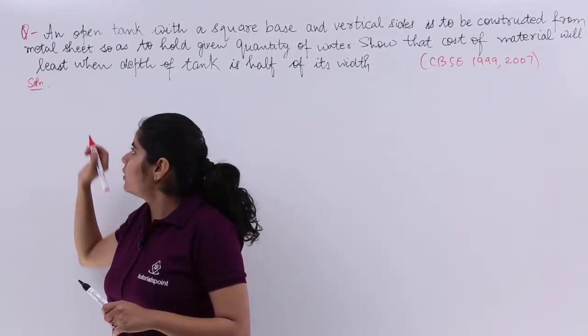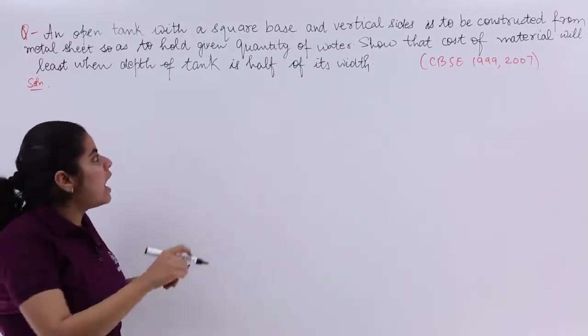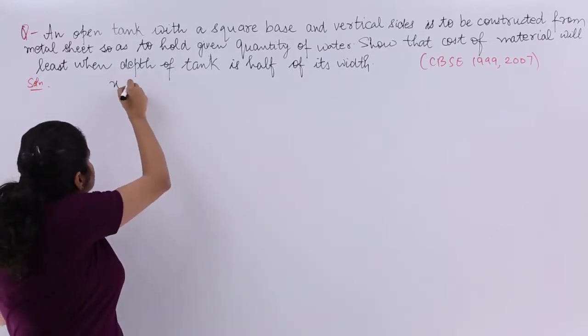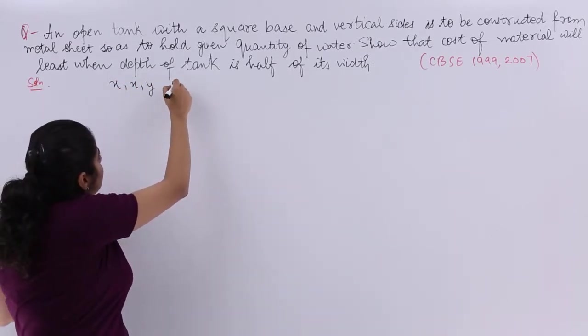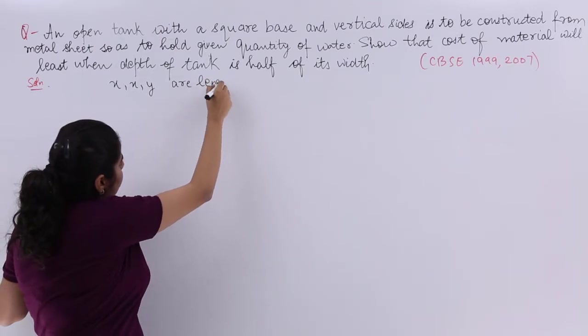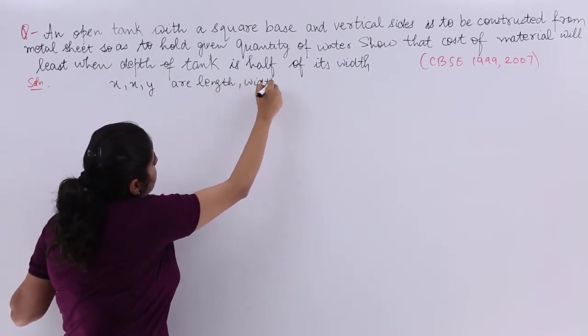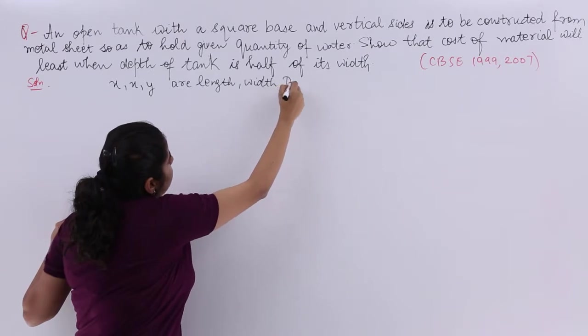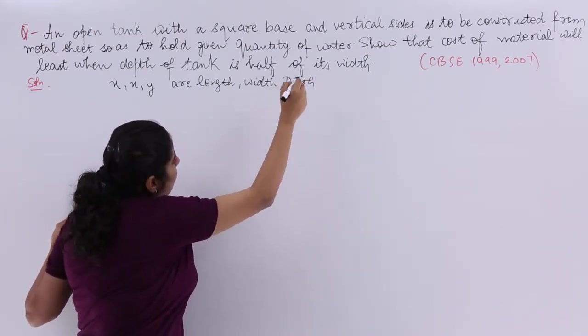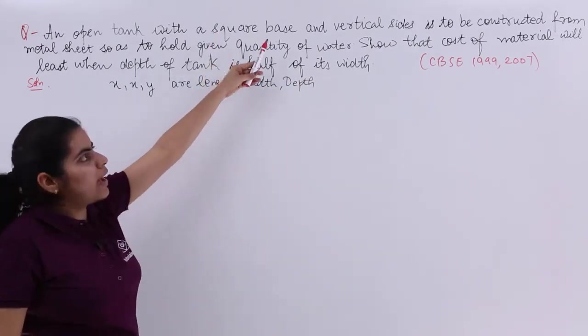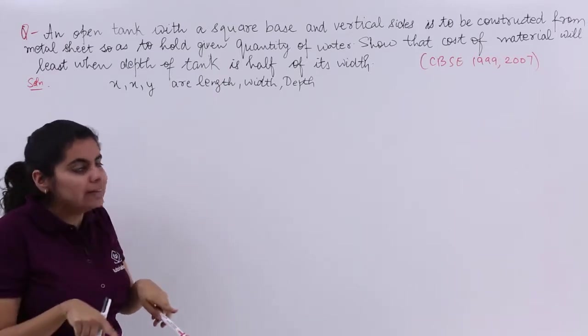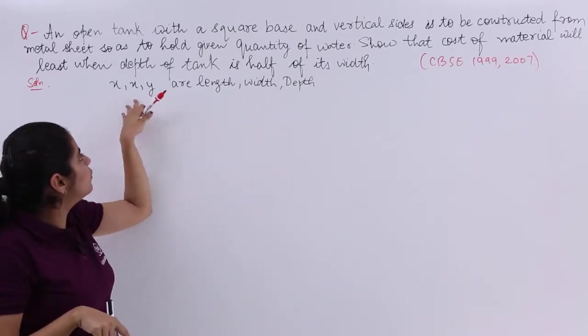I assume that x, x, and y are the length, the width or breadth, and the depth or height. Why am I assuming this? Because it says there is a square base. Square base means length and breadth have to be equal. So length and width have to be equal.